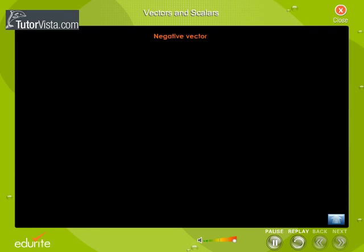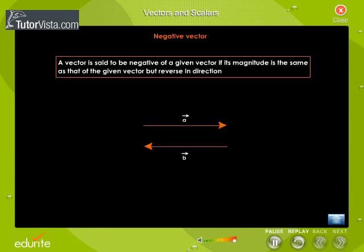Negative Vector: A vector is said to be negative of a given vector if its magnitude is the same as that of the given vector, but reverse in direction. Vector B is the negative of vector A.